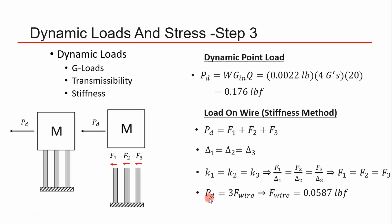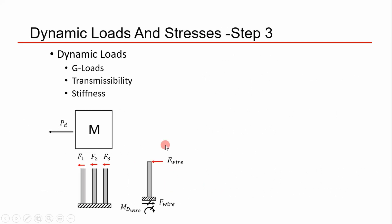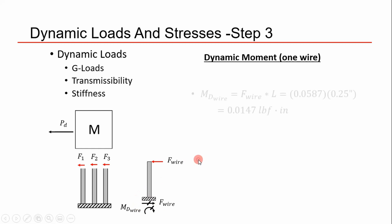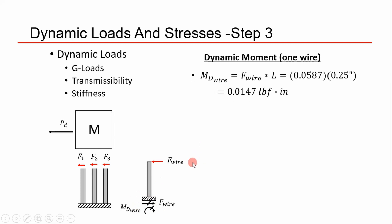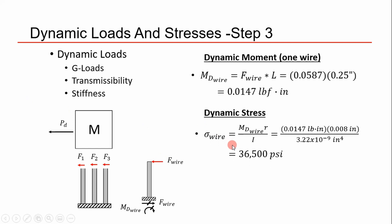Now we look at one wire with a free body diagram to determine the reaction loads — specifically the dynamic moment at the base. This is straightforward cantilever beam calculation. Once the dynamic moment is determined from the wire's dynamic load, we calculate stress using the bending stress equation. The result is a worst case stress of approximately 36,500 psi on the wire.